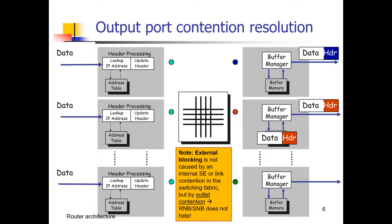This situation differs from strictly non-blocking or rearrangeable non-blocking networks. In switching fabrics, blockings are internal — a non-blocking network has no internal block condition, meaning no contention of any internal link or switch. In this case, the contention regards the output port — it's on the edge, not internal. So even if you use a strictly non-blocking or rearrangeable non-blocking network to implement a router, this will not help in solving output port contention. You need a buffering system.